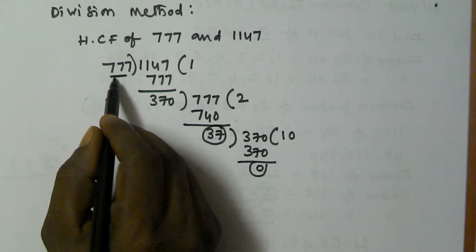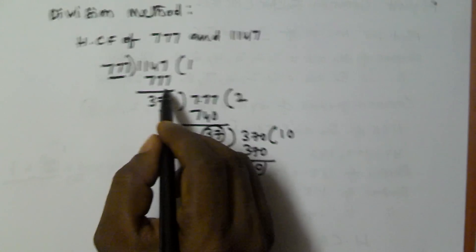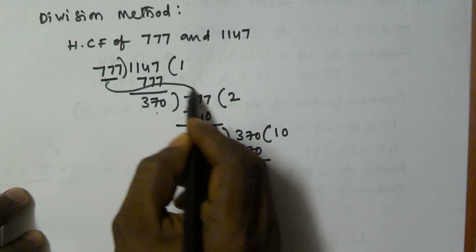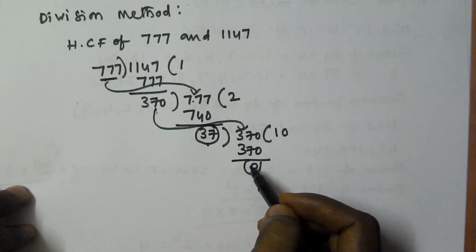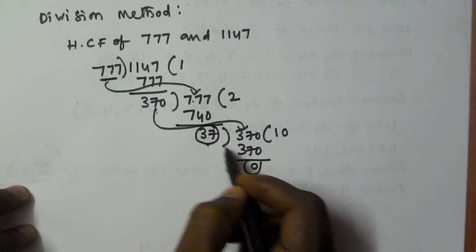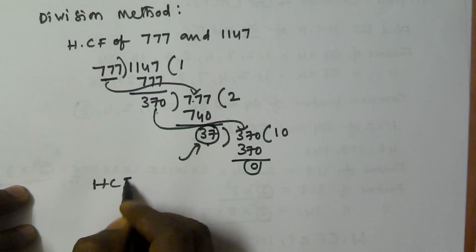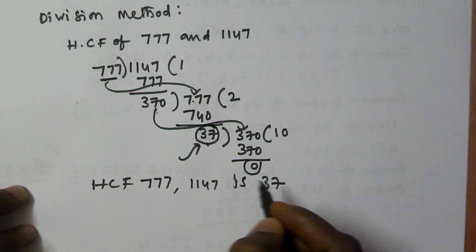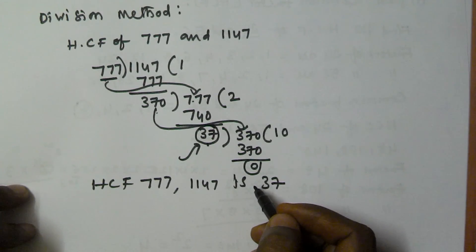We repeat this procedure until we get remainder 0, and the last divisor will become the HCF of the numbers. So the HCF of 777 and 1147 is 37. This is the division method. I hope you understand it. Thank you very much for watching this video. Please subscribe to my channel.